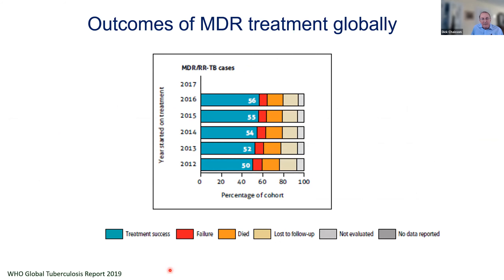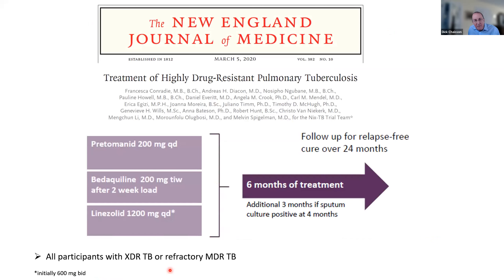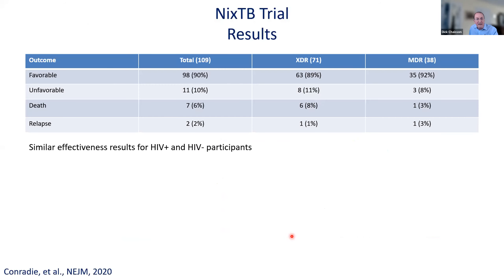A quick word about MDR-TB: overall, treatment outcomes are terrible. Only 50% of patients who get treatment — and most don't even get treatment — are successfully treated. This changed dramatically with the NICS-TB study, which used a novel regimen of three new agents: pretomanid (a nitroimidazole), bedaquiline (an ATP synthase inhibitor), and linezolid (a repurposed drug) — in an uncontrolled six-month trial. Half the patients had HIV, and it achieved a 90% success rate for people with MDR and XDR-TB, with the same results for people with HIV.